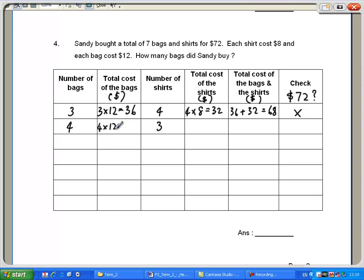4 bags, each costing $12. That would be $48. 3 shirts, each costing $8. That would be $24.